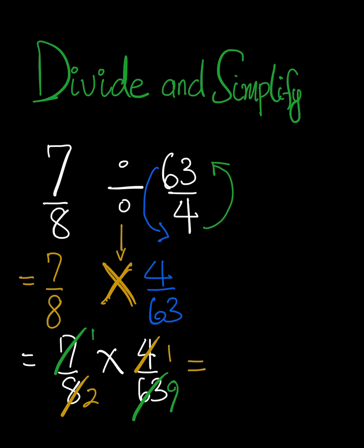So here we have it. We have 1 times 1, which gives us 1, because there's no more common factors. And 2 times 9, which gives us 18. So 1 over 18 is our final answer. I hope this helps. Thank you, and please subscribe.